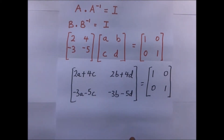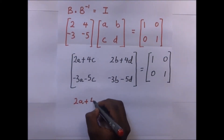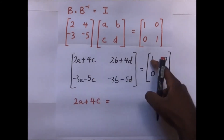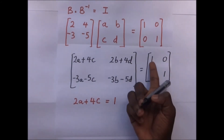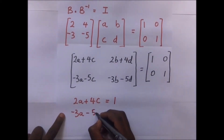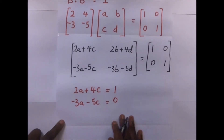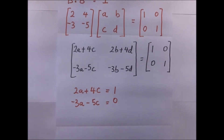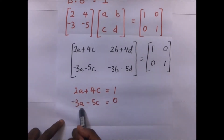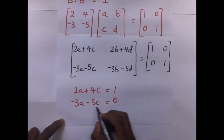From the first pair: 2A + 4C = 1 and -3A - 5C = 0. From these two simultaneous equations we can find the values of A and C. We will use the substitution method — let's make C the subject of the formula from the second equation.